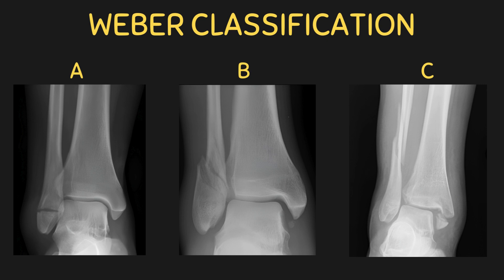The fibula is the long skinny bone in your leg. The Weber classification is important because it will determine the treatment pathway for the patient by identifying the fracture's involvement with the ankle syndesmosis joint. The ankle syndesmosis is a group of ligaments which helps to provide stability to the ankle joint. A disruption to the stability of the ankle joint may lead to ankle osteoarthritis and other complications.